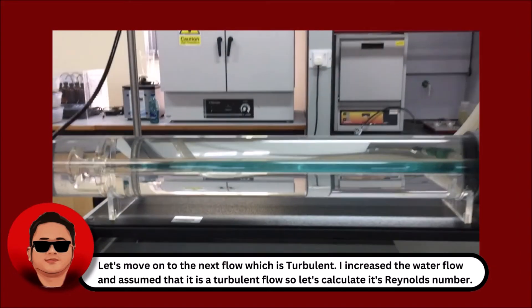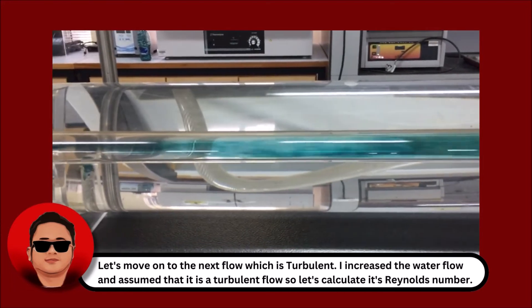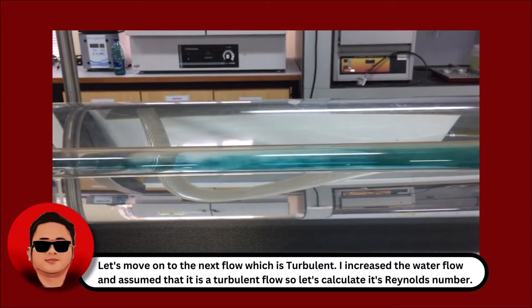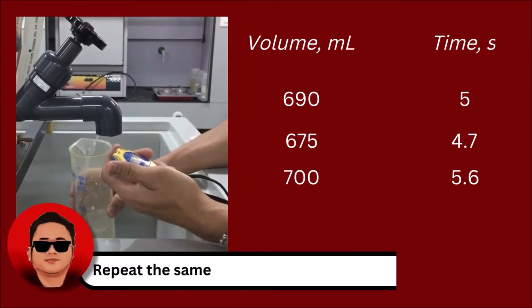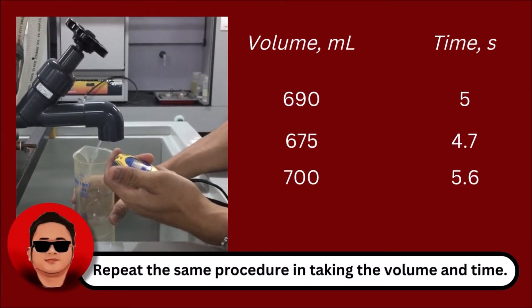Let's move on to the next flow which is turbulent. I increased the water flow and assume that it is turbulent flow, so let's calculate its Reynolds number. Just repeat the same procedure for finding the volumetric flow of the fluid.